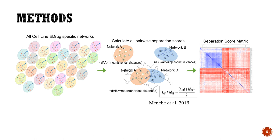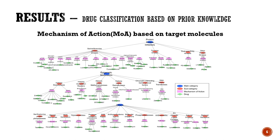After we modeled all available cell-line drug networks, we applied a topology-based separation score measure to compare the networks pairwise. This method calculates the mean of shortest distances between proteins when two networks are mapped on the interactome, and these pairwise net scores are transferred to a matrix representation for clustering purposes. Here you see the representation of mechanism of actions of drugs used in the study. We have protein kinase inhibitors, epigenetic modulators, and examples for some other mechanisms. We use these mechanism of actions in our further analysis of network comparisons to define the ground truth.